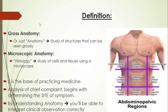Let's talk about some definitions. If we say anatomy by itself, or gross anatomy, both of them refer to the same thing: the study of structures that can be seen grossly. We are describing structures by the aid of the eye. Then we have microscopic anatomy, which is histology — the study of cells and tissues using a microscope.